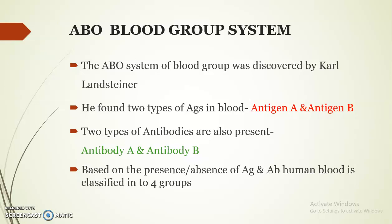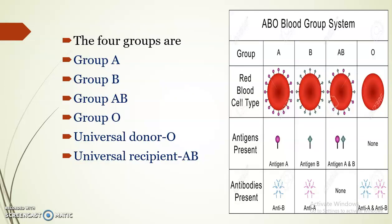Based on the presence or absence of antigens and antibodies, human blood is classified into four groups: group A, group B, group AB, and group O. Group A contains RBCs with A antigen on their surface and possesses antibody B. Group B has antigen B on the RBC surface and possesses anti-A. Group AB has RBCs that possess both A antigen and B antigen on their surface but lack both anti-A and anti-B antibodies.